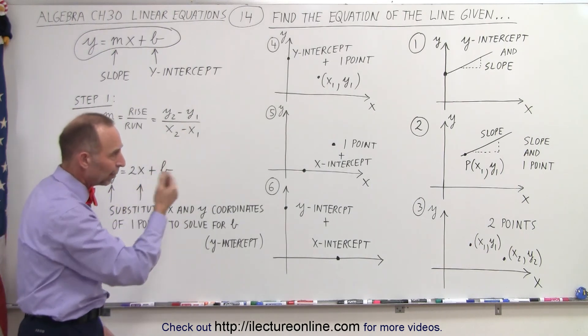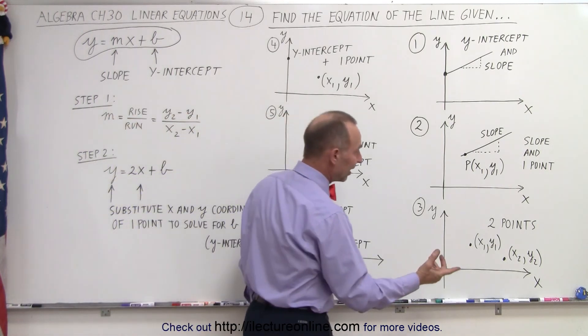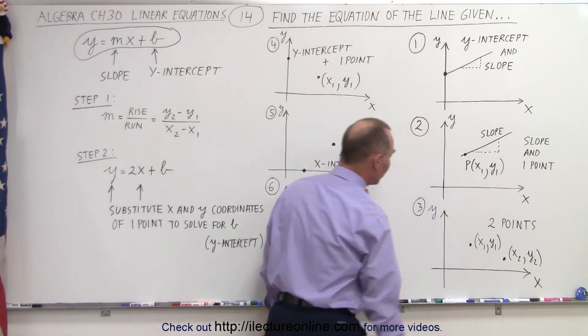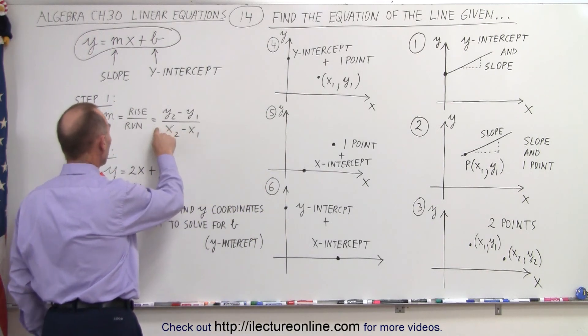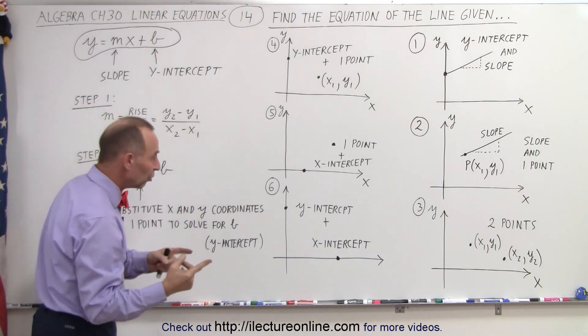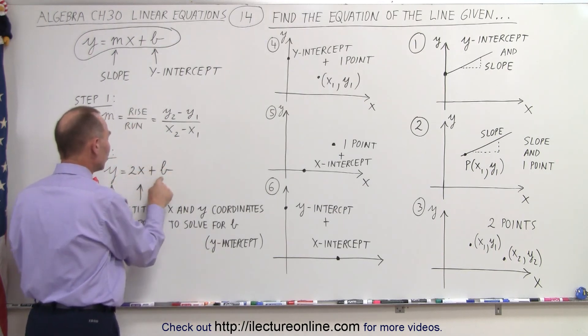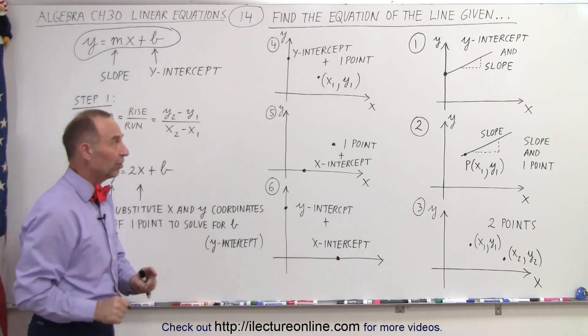So let's see how that applies to the rest of the examples. Let's say they give you two points. Well, if they give you two points, you're going to use those two points for step one to find the slope. Once you have the slope, you take one of the two points, plug them into your x and y into the equation here to solve for b, the y-intercept.